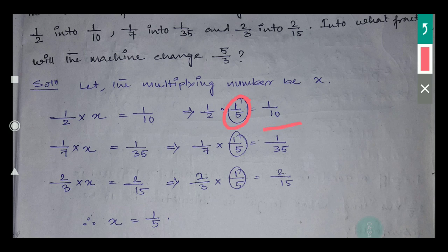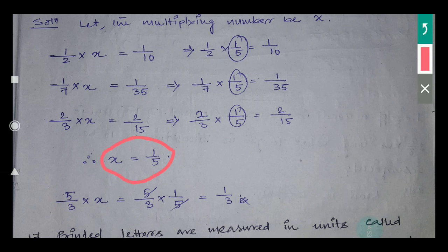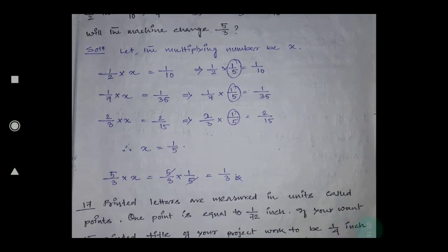So that is the rule of the multiplying machine. Now the question asks: into what fraction will the machine change 5/3? The machine rule is x equals 1/5. So 5/3 into 1/5 — here the 5 in the numerator and denominator cancel, giving 1/3. So if you give the input 5/3, the output will be 1/3.